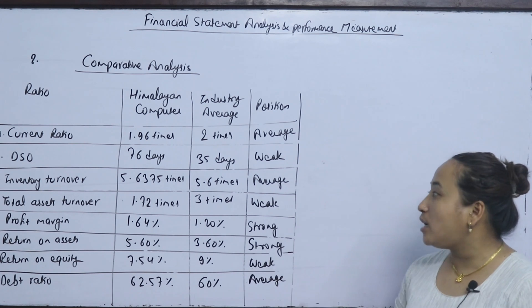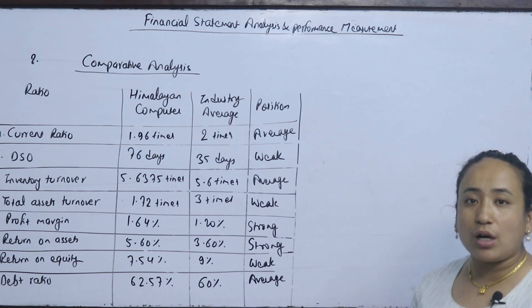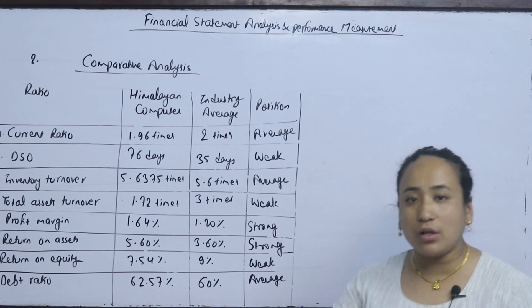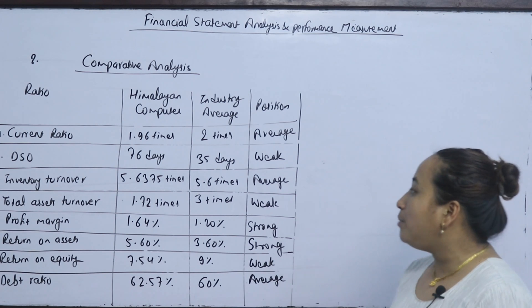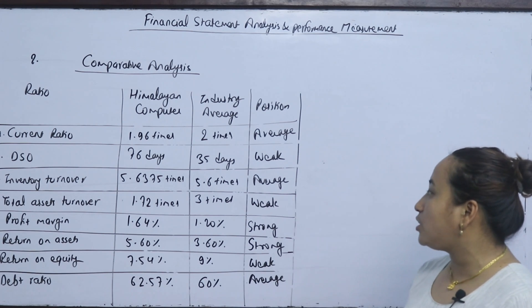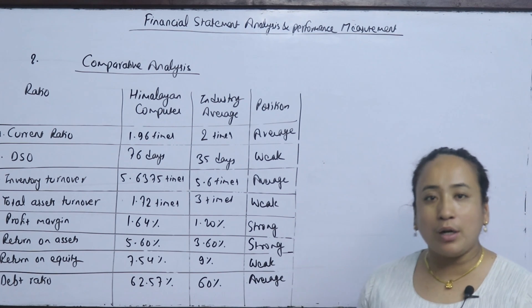For further analysis: we can improve DSO through better collection practices. The inventory turnover ratio is not normal, so there is room for improvement.